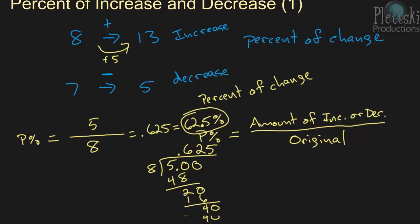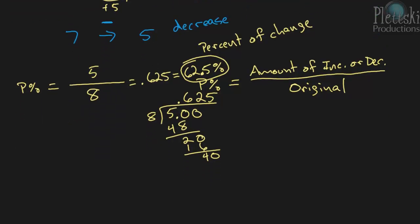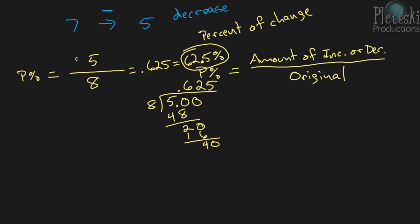Let's look at the second one, 7 to 5. So this is a decrease. So we're going to use the same formula, the same equation. We're going to have our percent equals, well, the original amount goes on the bottom. Our original amount in this case is 7.